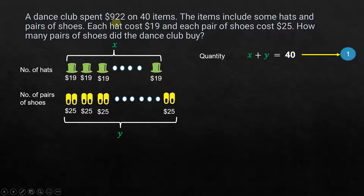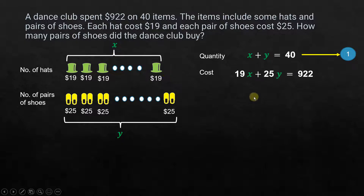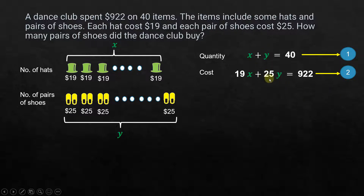The cost equation is: 19X plus 25Y equals $922. This gives us Equation 2. In mathematical terms, we call this a system of simultaneous equations — we have two equations in X and Y, and we can solve them to find the values of X and Y.